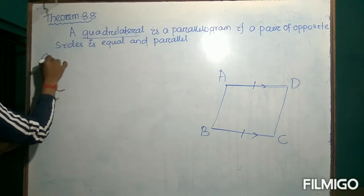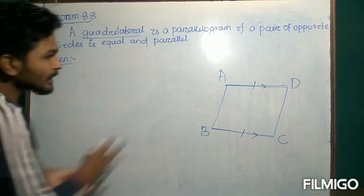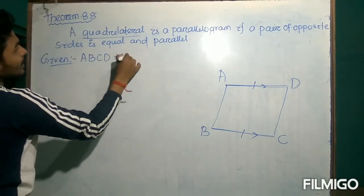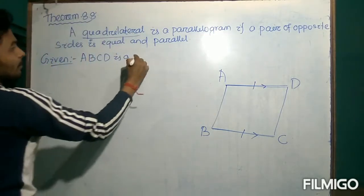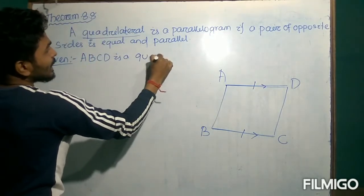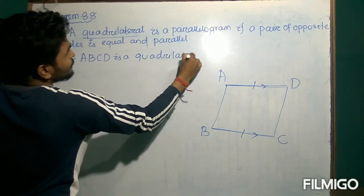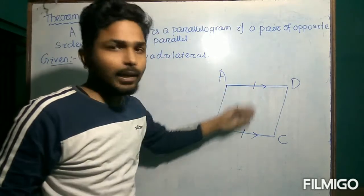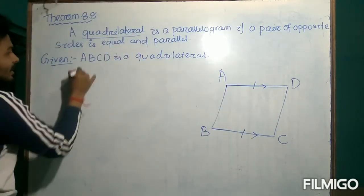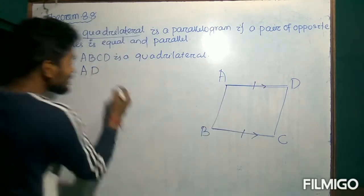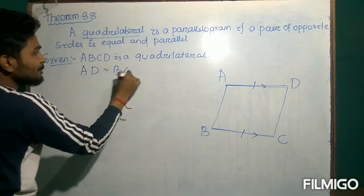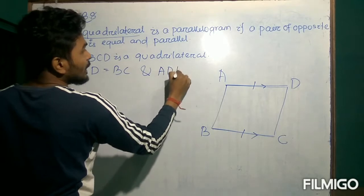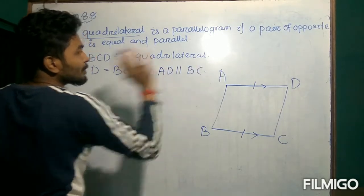Let us write the given statement. ABCD is simply a quadrilateral, not a parallelogram. And in this quadrilateral, these two are a pair of opposite sides. It is given that AD is equal to BC, and AD is parallel to BC.